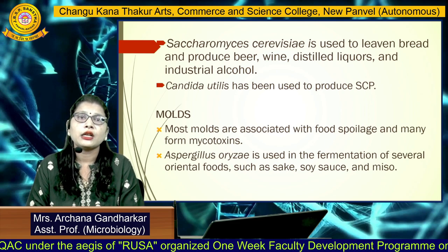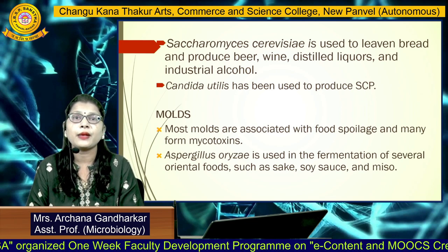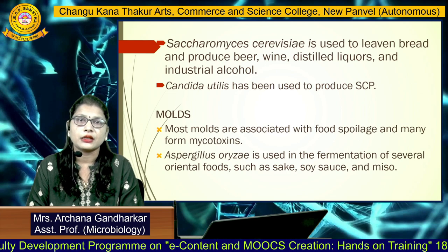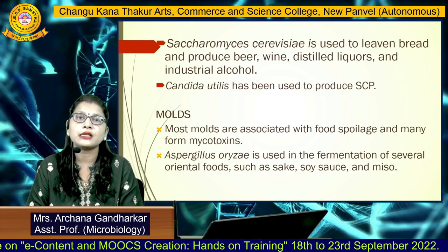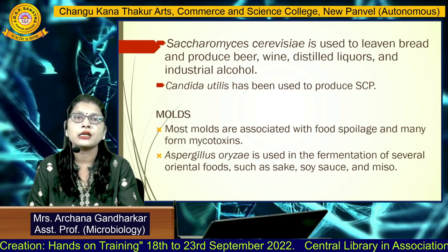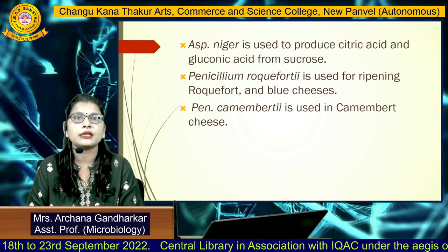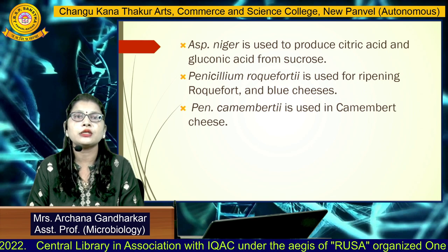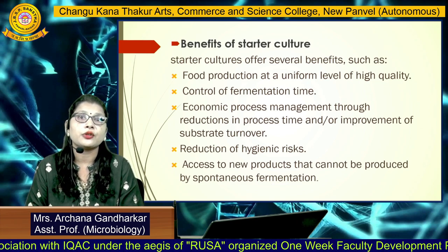Regarding molds: molds are associated with food spoilage, producing mycotoxins, and can tolerate high concentrations of salt and sugar. Examples of molds used in fermented foods include: Aspergillus oryzae, used in fermentation of oriental foods such as sake, soy sauce, and miso; Aspergillus niger, used for production of citric acid and gluconic acid from sucrose; Penicillium roqueforti, used for ripening of Roquefort and blue cheese; and Penicillium camemberti, used for Camembert cheese.